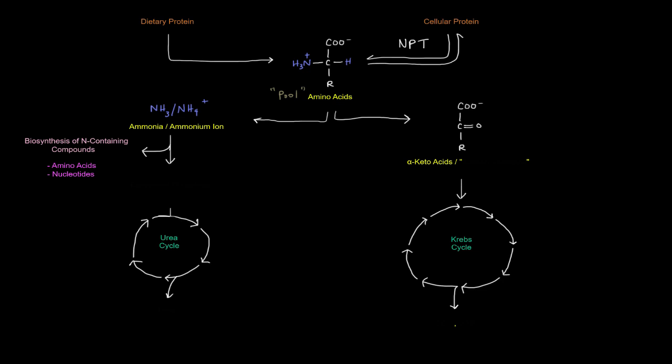If the requirement for the biosynthesis of the nitrogen containing compounds is exceeded by the amount of nitrogen, if there's more nitrogen than we need to build these compounds, that's bad because an excess of the ammonium ion is toxic. So that ammonium ion will have to be packaged in carbamoyl phosphate, which can go through the urea cycle to eventually be safely excreted as urea.